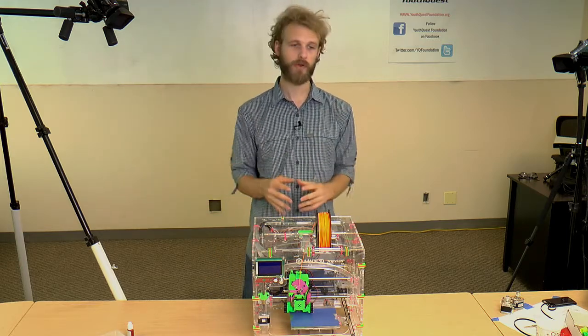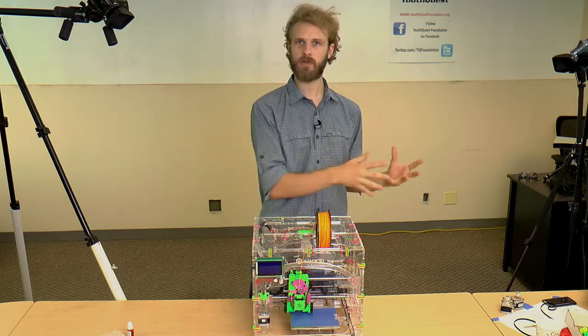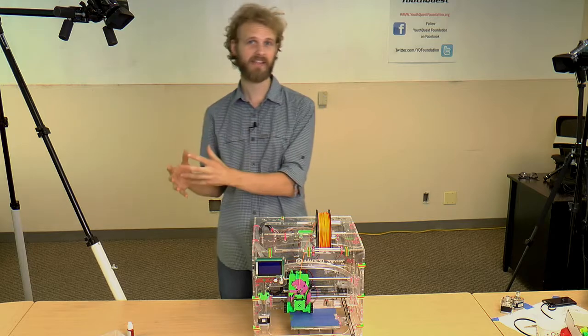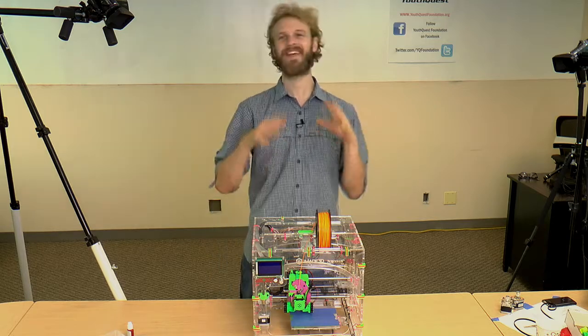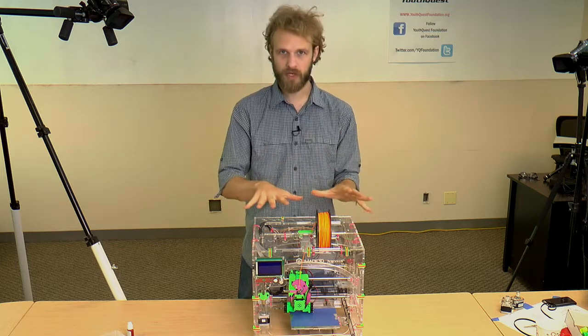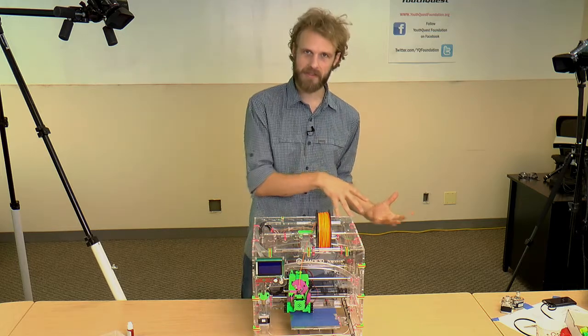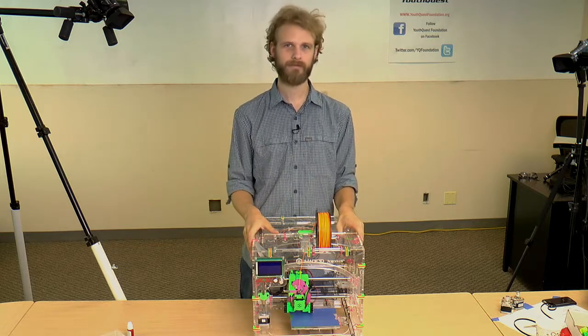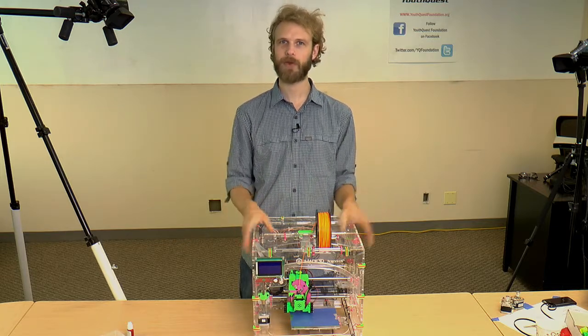In general, we're going to preassemble a few parts. We're going to preassemble the Y axis and X axis separately. Then we're going to build a little bit of the box itself, mount on the electronics, incorporate the X axis, incorporate the Y axis, close it up and then we'll be done. Let's get to it.